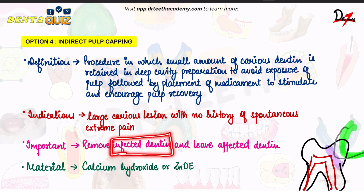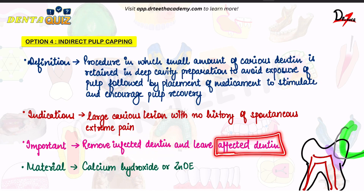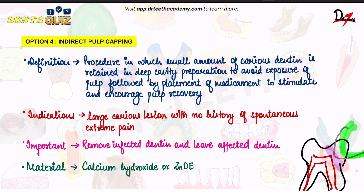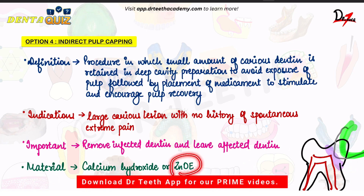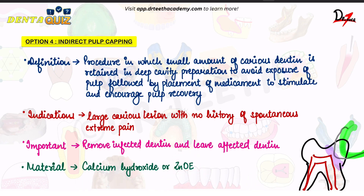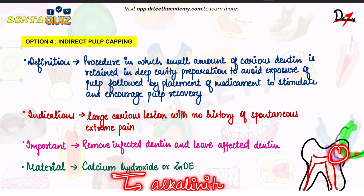We remove the infected dentine and leave the affected dentine because infected dentine cannot be remineralized, whereas the affected dentine has the property of remineralization. So the dentine that we leave here can remineralize on its own. The materials used are calcium hydroxide or zinc oxide eugenol.